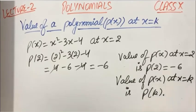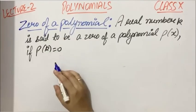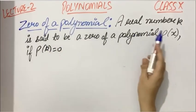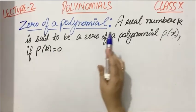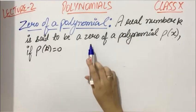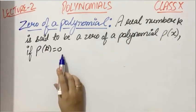Now let's move to our next topic, which is zero of a polynomial. A real number k is said to be a zero of a polynomial P(x) if P(k) equals 0. That real number at which the polynomial attains a value equal to zero is called a zero of the polynomial.